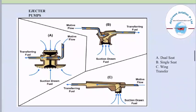The figure shown in part A is a picture of a dual seat ejector pump. The figure shown in part B is a single seat, and the figure shown in part C is a wing transfer pump.